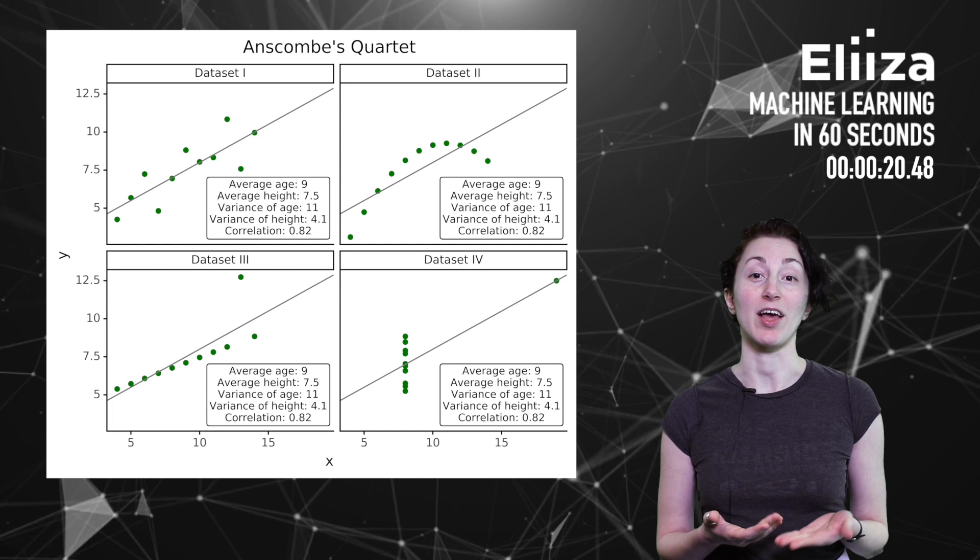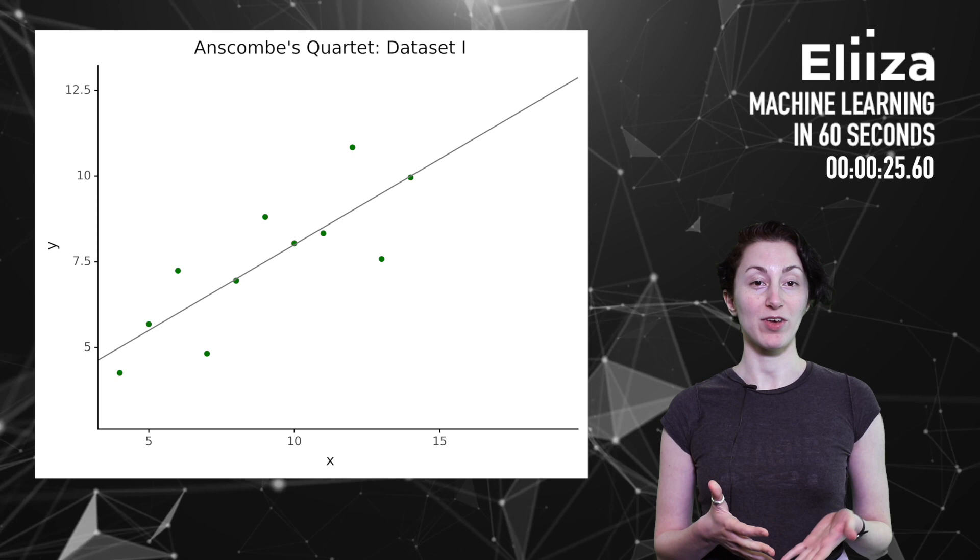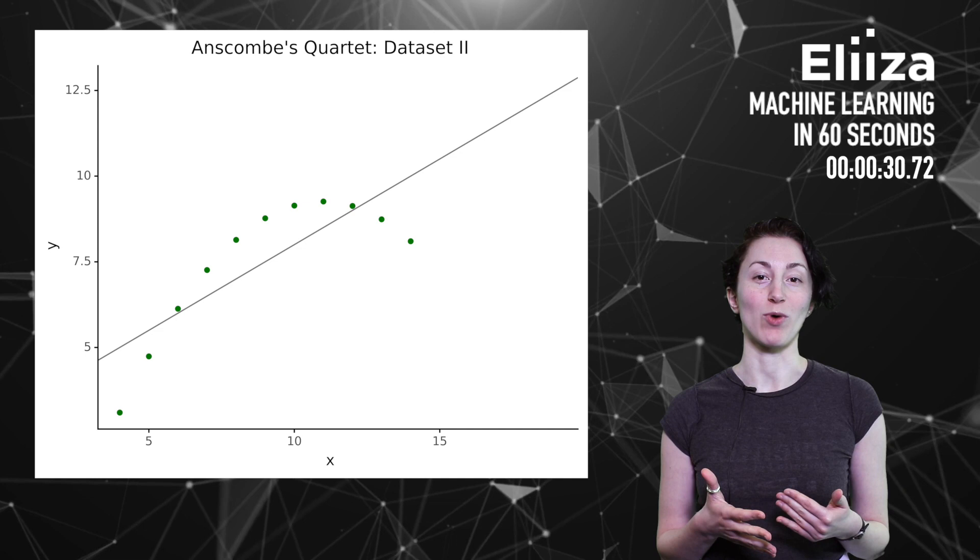This plot shows a linear relation between x and y, and the line of best fit approximates it well. For this dataset, there clearly is a relation between x and y, but it is not a linear one.